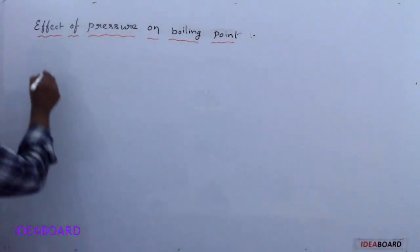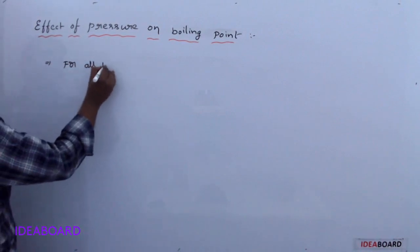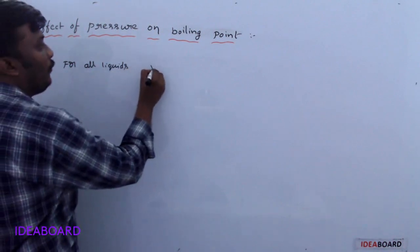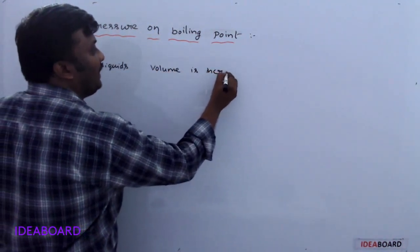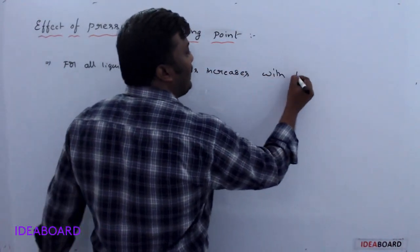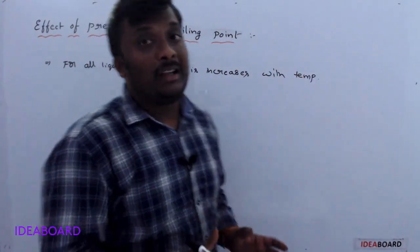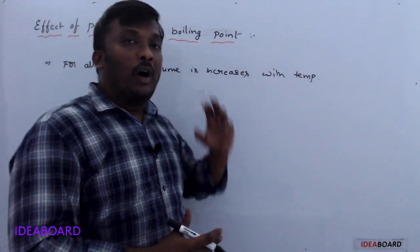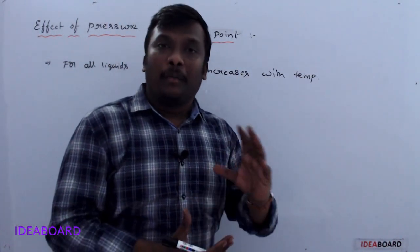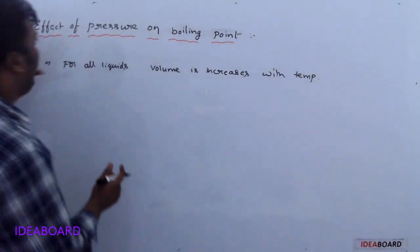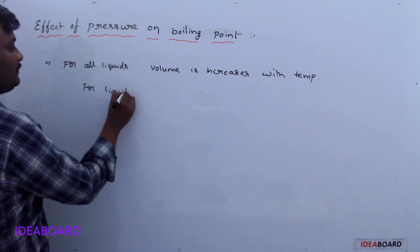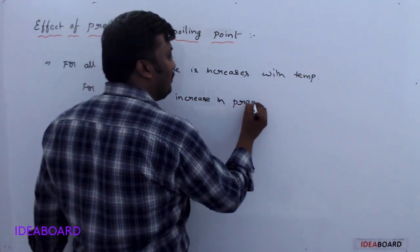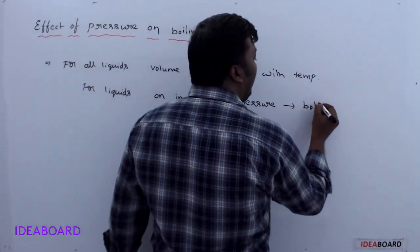For all liquids, volume increases with temperature — except for water between 0 and 4 degrees Celsius. For all other liquids, on increasing temperature, volume increases. Whenever volume increases, the boiling point always increases. So for liquids, on increase in pressure, boiling point also increases.